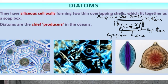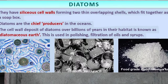A very important feature in diatoms is their cell wall. As shown in the picture, the cell wall consists of two thin overlapping shells — one upper and one lower — that fit together just like a soapbox. The upper shell somewhat overlaps the lower shell. These walls are embedded with silica, making this structure very distinctive.